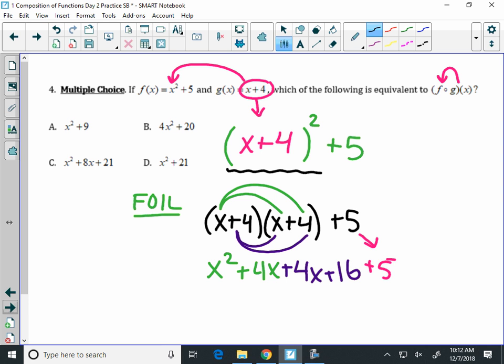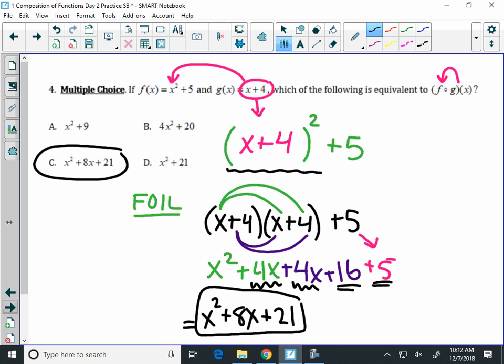All you have to do now is combine your like terms. The x's go together, and the constants go together. So the equation f of g of x is equal to x squared plus 8x plus 21. And that looks like option C in the multiple choice.